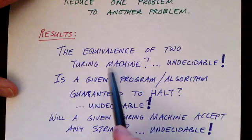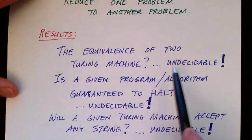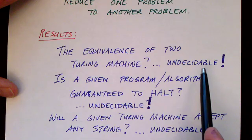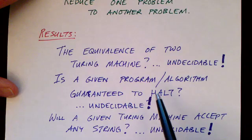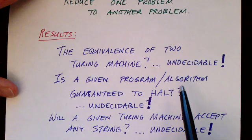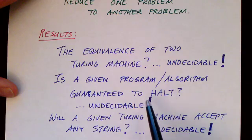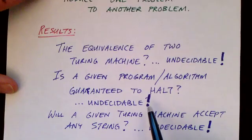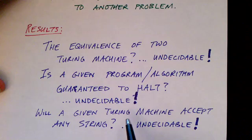Consider two Turing machines — do they do the same thing? That is, are they equivalent? Do they accept the same language? This turns out to be undecidable, and in this series of videos we'll show the proof for that. How about a program? Does it always halt? Is a particular program guaranteed to halt, or might it sometimes loop forever? That's an important question to ask if you're a programmer, but it turns out that problem is, in general, undecidable. Given a particular Turing machine, does it accept any string? Is the language defined by that Turing machine empty or not? Well, it turns out that that is also undecidable.